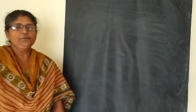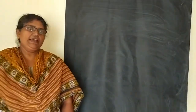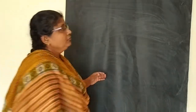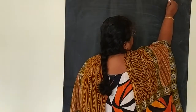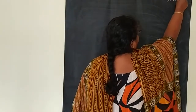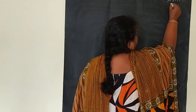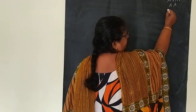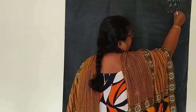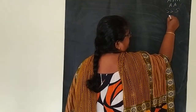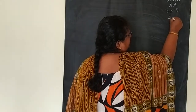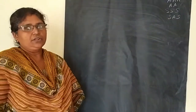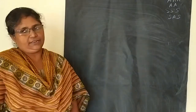Last class, we studied similarity criteria and I already explained everything. Similarity criteria are AAA similarity criteria or AA similarity criteria. Next one is SSS and next one is SAS. So these are the three similarity criteria.